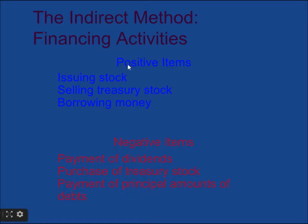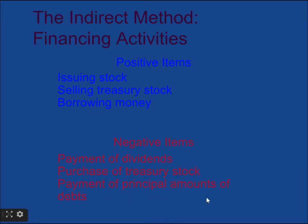For financing activities, positive items are: issuing stock, selling treasury stock, and borrowing money — all these should be added when calculating cash flow for financing activities. What should be deducted? Payment of dividends, purchase of treasury stock, and payments of principal amounts of debts.